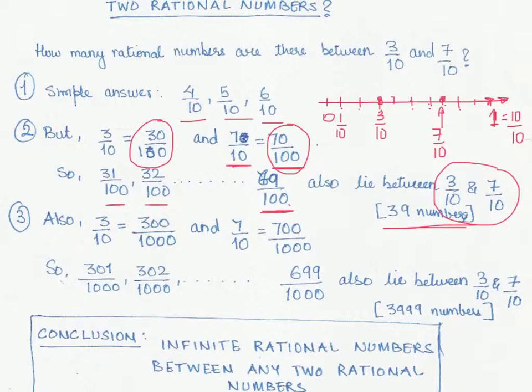So now all of a sudden we have even more choice of trying to find out rational numbers between 300 by 1000 and 700 by 1000. And the way in which we progress through this is we say we have 301 by 1000, 302 by 1000...